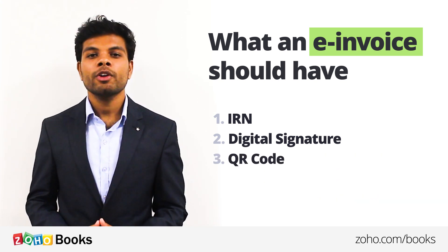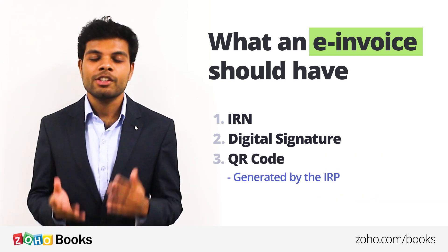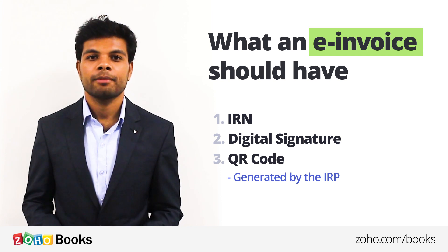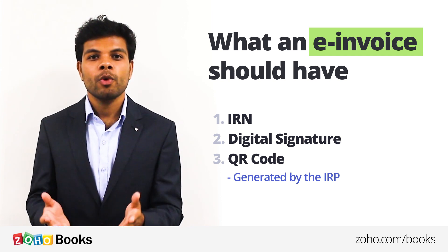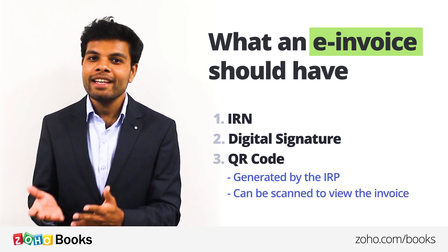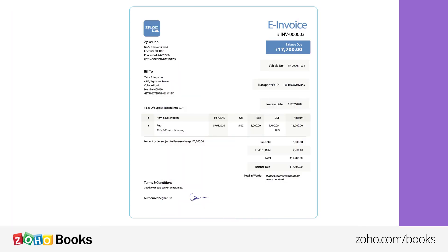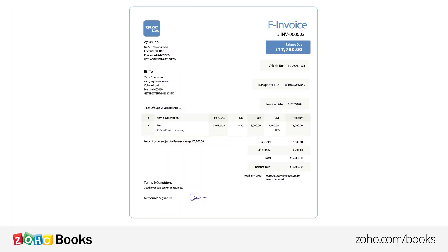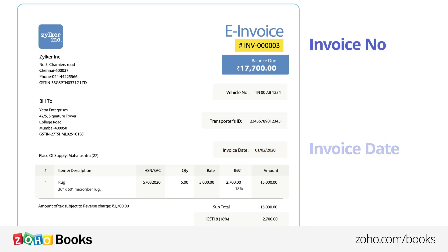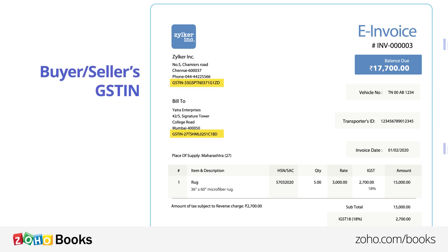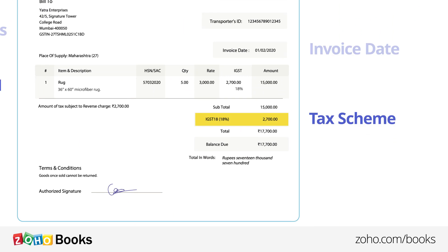Third, a QR code, for which the data is also generated by the IRP. The QR code can be scanned at any time to view the invoice. As per the predefined template, an e-invoice must include mandatory fields such as Invoice Date, Invoice Number, Buyer and Seller's GST Identification Number, their Address, HSN Code, Tax Scheme, and more.